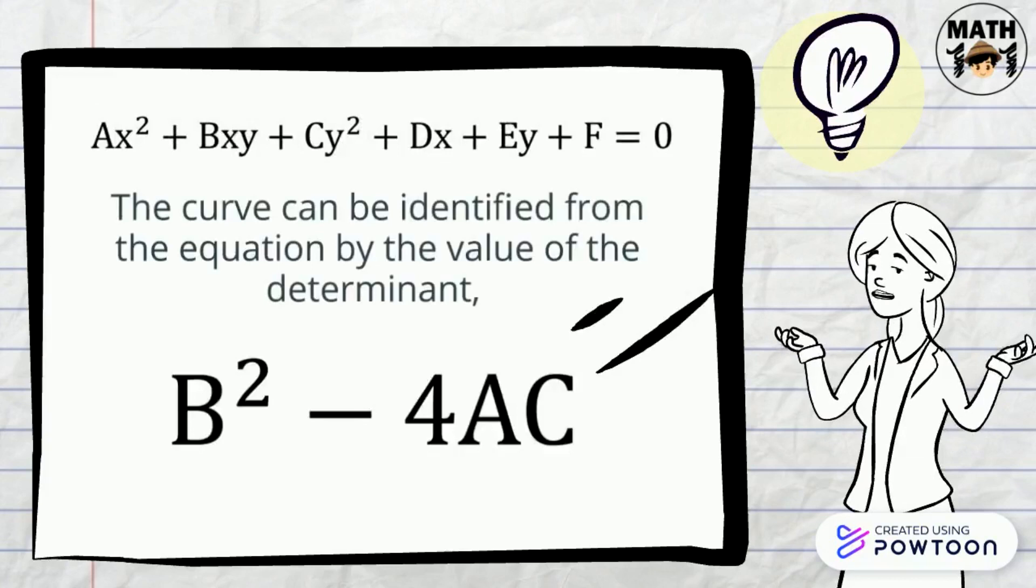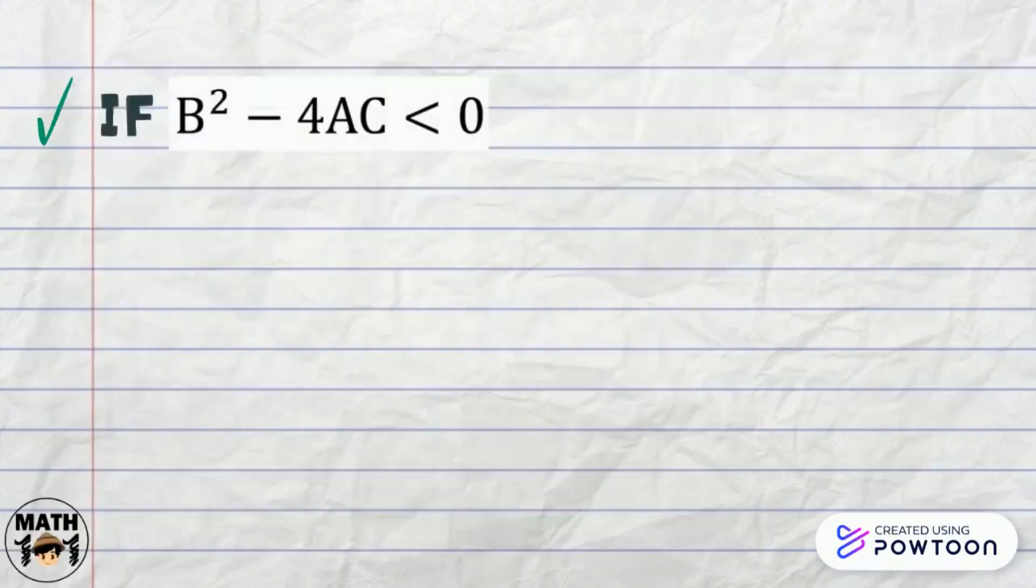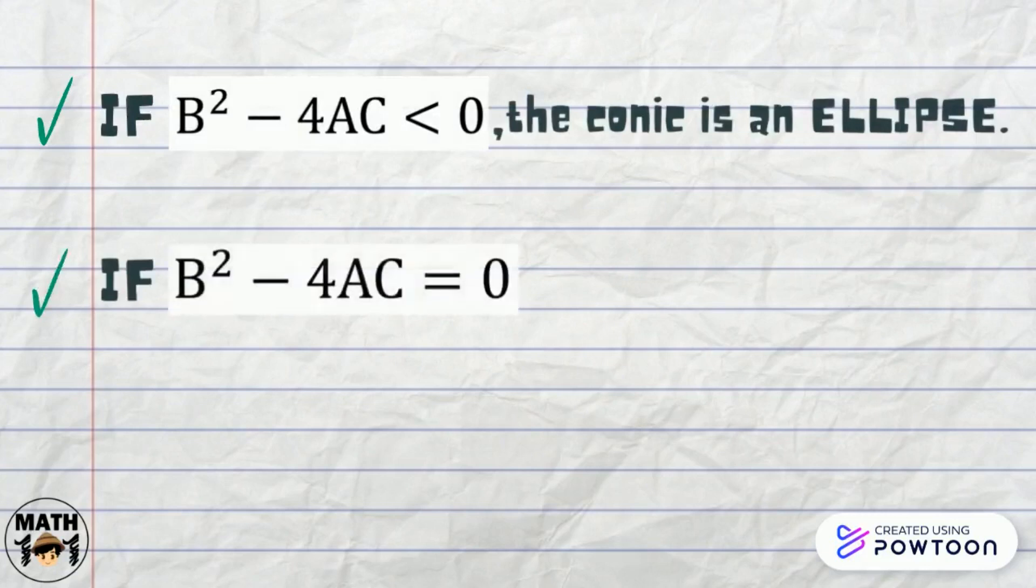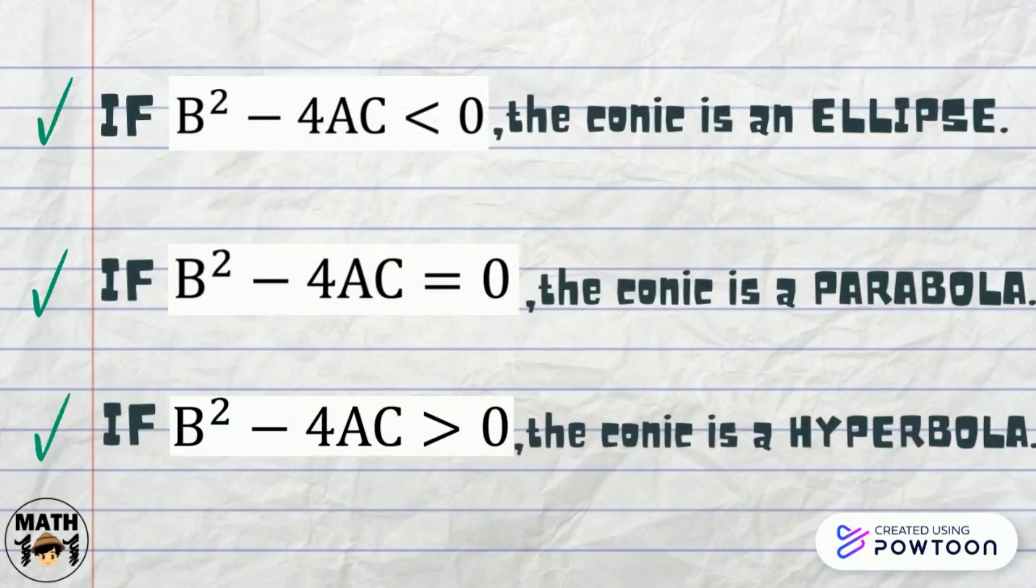Given the equation of the curve, we can easily identify the type of conic by using the discriminant b squared minus 4ac. If the discriminant is less than zero, the conic is an ellipse. If it equals zero, the conic is a parabola. And if it is greater than zero, the conic is a hyperbola.